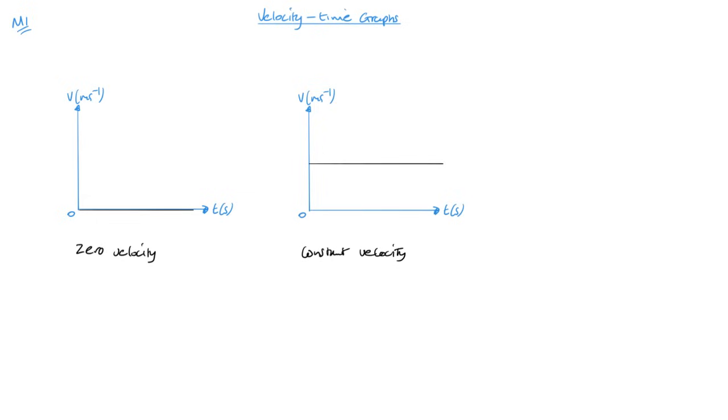So it means it isn't accelerating. And then if I have a diagonal line, something like this, this would be constant acceleration.